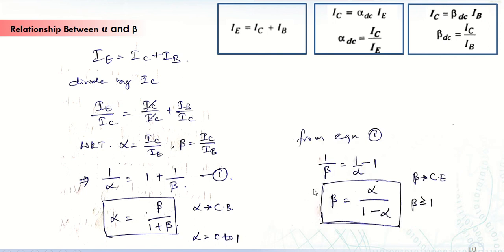Similarly, if we write the expression for 1 by beta, by taking the 1 to the left side, this becomes 1 by beta is equal to 1 by alpha minus 1. Solving for beta, it becomes beta is equal to alpha divided by 1 minus alpha.